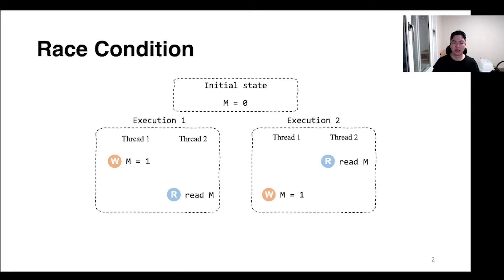In this presentation, I would like to talk about the way to exploit race conditions. So let's start with the definition of race conditions. Race conditions means that results vary depending on the order of access to memory.